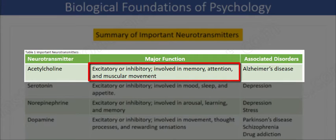And if acetylcholine transmission is blocked, it may cause paralysis, as the muscles cannot contract. For example, bacteria in improperly canned foods can form botulinum toxin, which blocks acetylcholine from being released at nerve-muscle synapses, and this can potentially lead to death by paralyzing the muscles that we use in breathing.